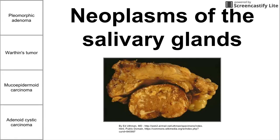This is a short video on neoplasms of the salivary glands. We're going to be talking about four neoplasms that are found in the salivary glands. Two of them are cancer and two of them are benign tumors.